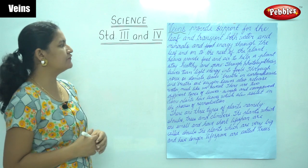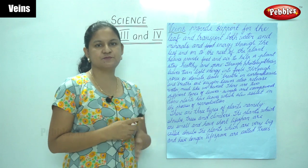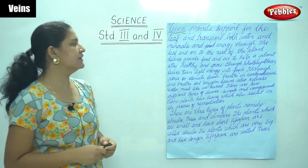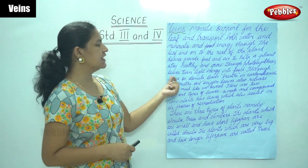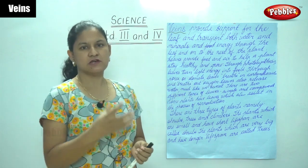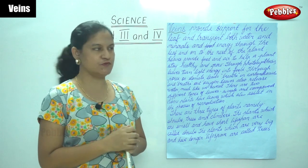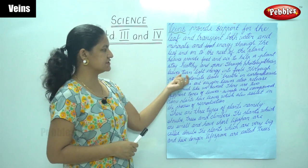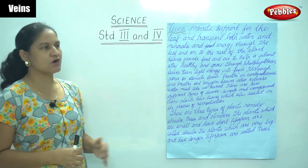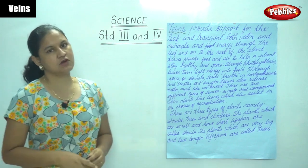Leaves provide food and air to help a plant stay healthy and grow. Through photosynthesis, leaves turn light energy into food. The sunlight absorbed by the chlorophyll is then converted into food. Through pores or stomata, leaves breathe in carbon dioxide and breathe out oxygen.